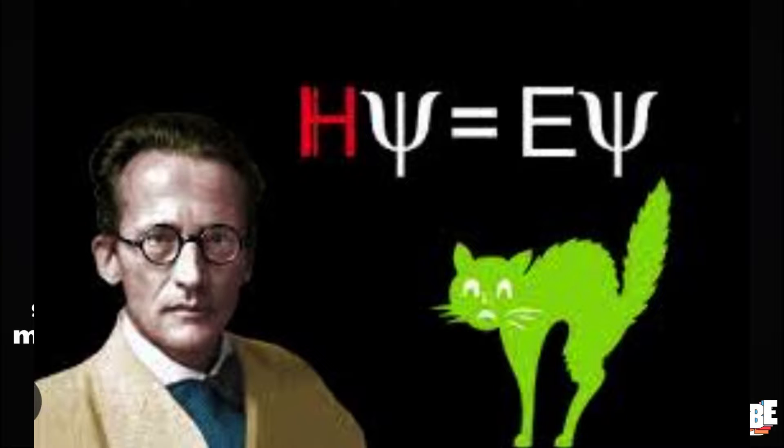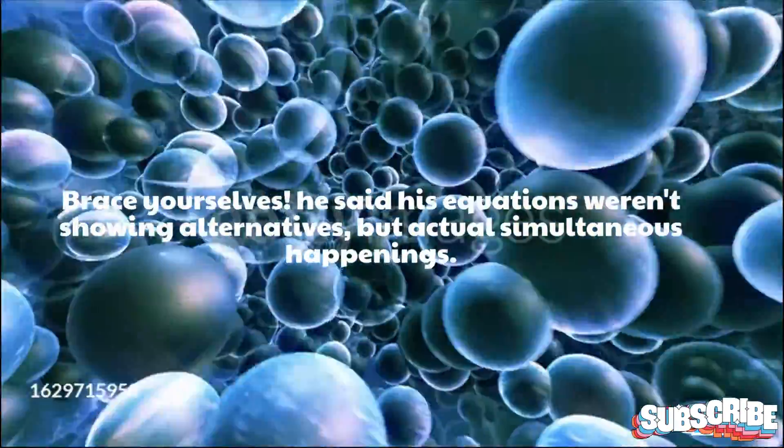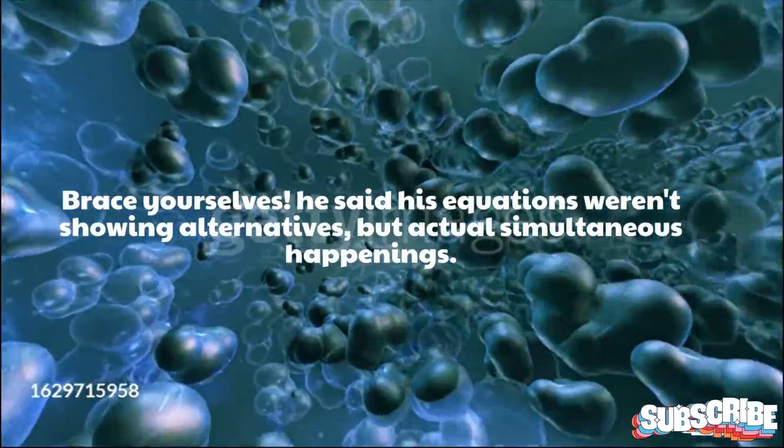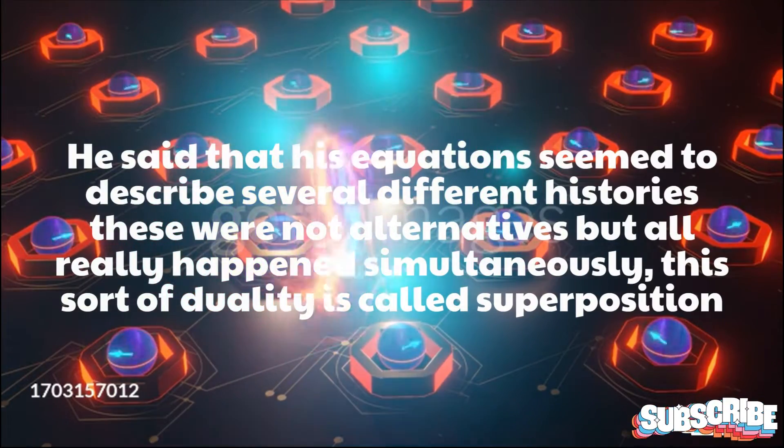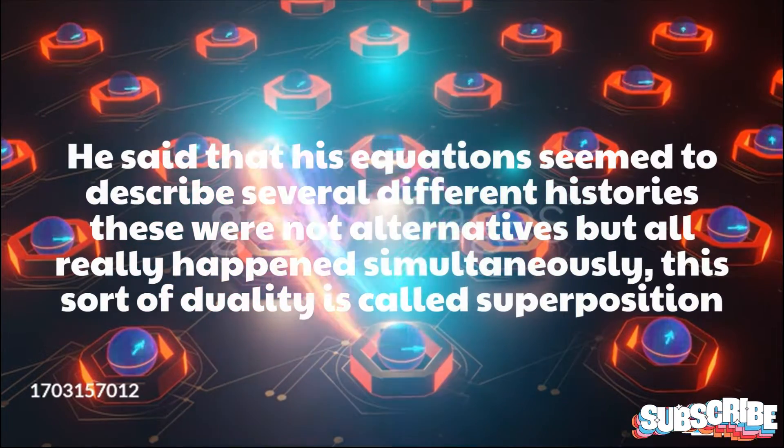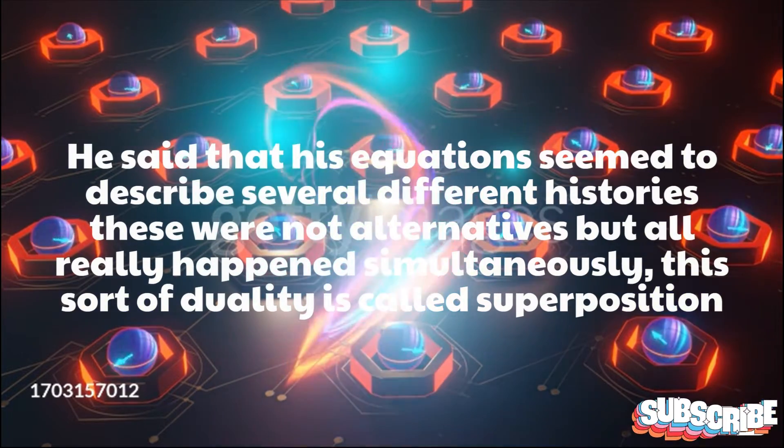In 1952, in Dublin, Erwin Schrödinger dropped the bombshell during a lecture. He said his equations weren't showing alternatives, but actual simultaneous happenings. He said that his equations seemed to describe several different histories—these were not alternatives but all really happened simultaneously. This sort of duality is called superposition.